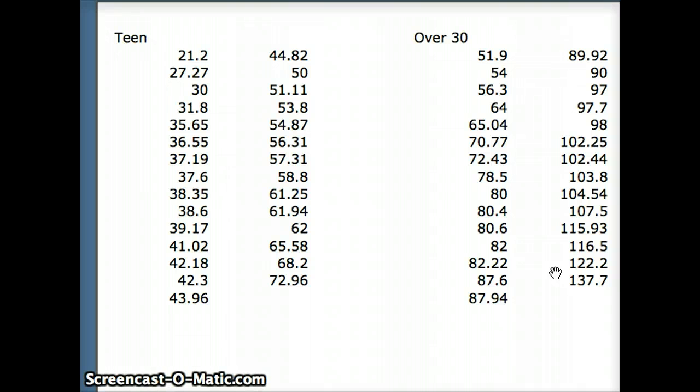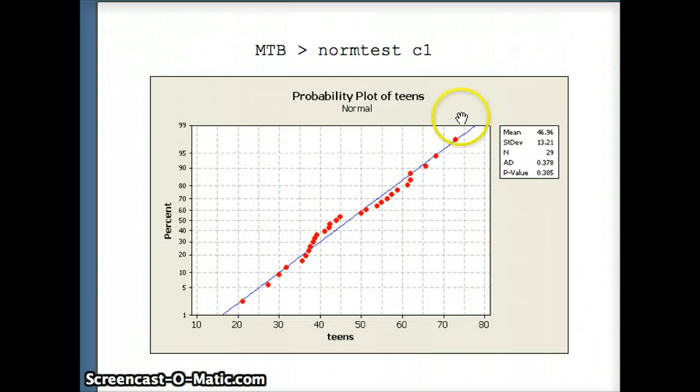Now we want to see if these data sets are normally distributed. So I'm going to use the normtest command on Minitab. We're going to put the teen data in C1, we're going to put the over 30 data in C2, and ask Minitab to run a normtest. So checking for normality, the command is going to be normtest C1. And you'll notice here, 14s, our p-value is 0.385. If the p-value is low, we reject normality. That p-value is not real high, but it's not low either. So it's reasonable for us to assume that this may have come from a normal distribution.